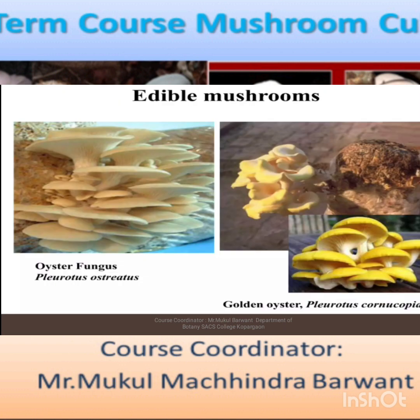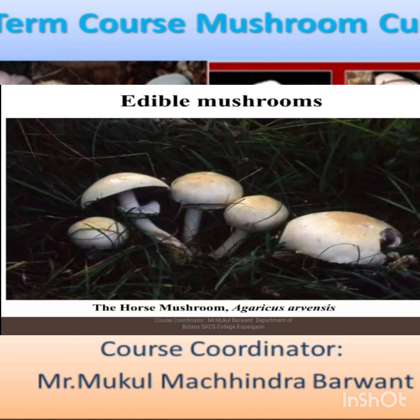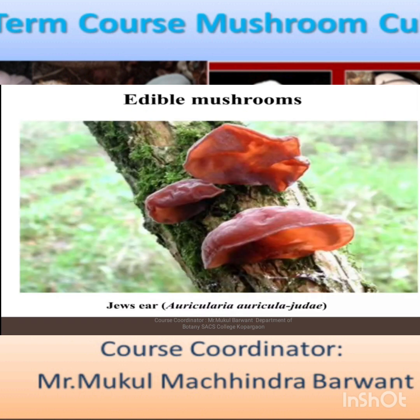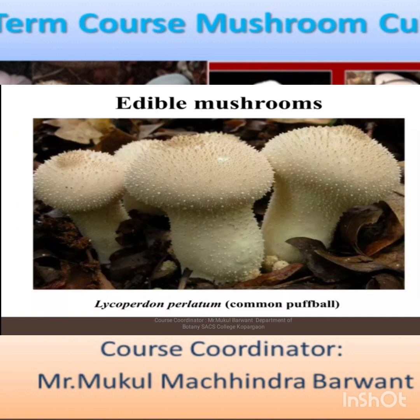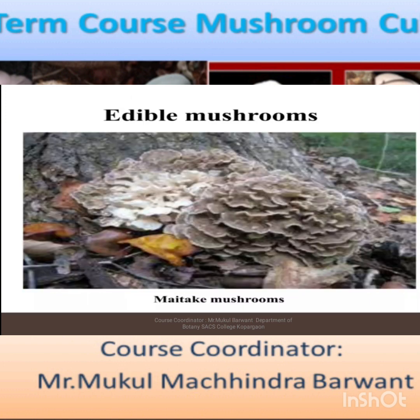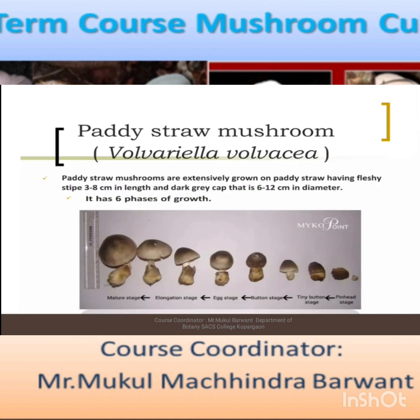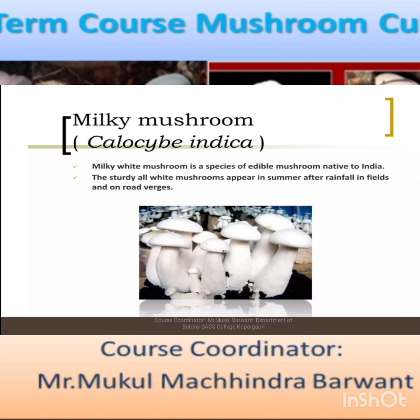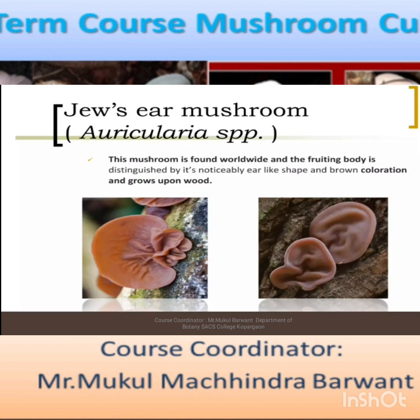Some species of edible mushrooms include: oyster fungus, also known as Pleurotus; golden oyster, also Pleurotus; button mushrooms, Agaricus; horse mushrooms, Agaricus arvensis; paddy straw mushroom, Volvariella; Chinese mushrooms; Java mushrooms, Agaricus; Lycoperdon species; common mushroom; maitake mushrooms; lion's mane mushrooms; paddy straw mushrooms at different stages; oyster mushrooms; button mushrooms; milky mushrooms; shiitake mushrooms; and oyster mushrooms.